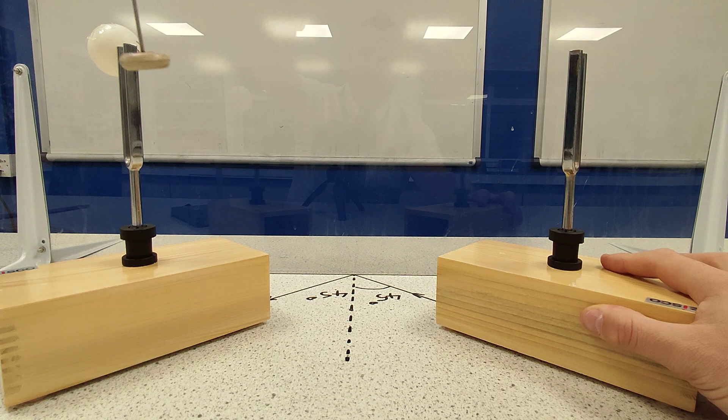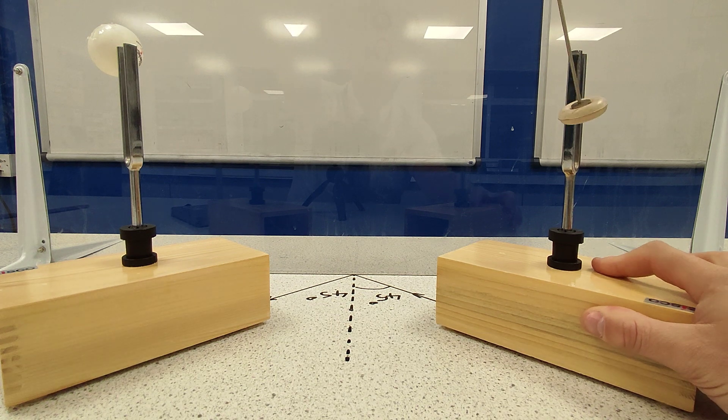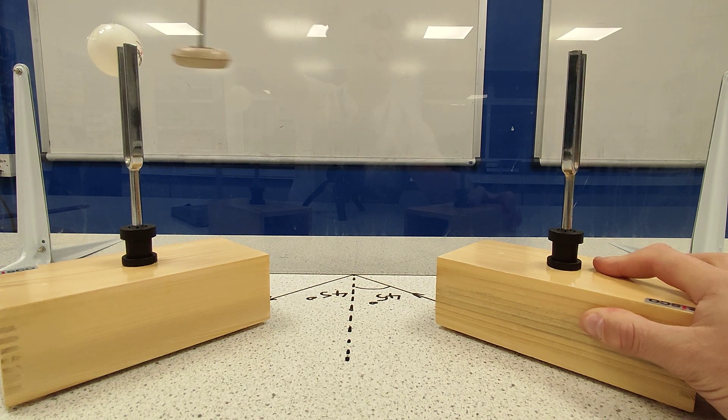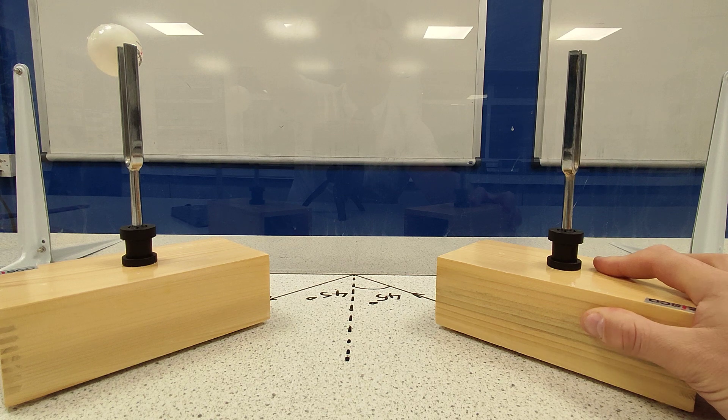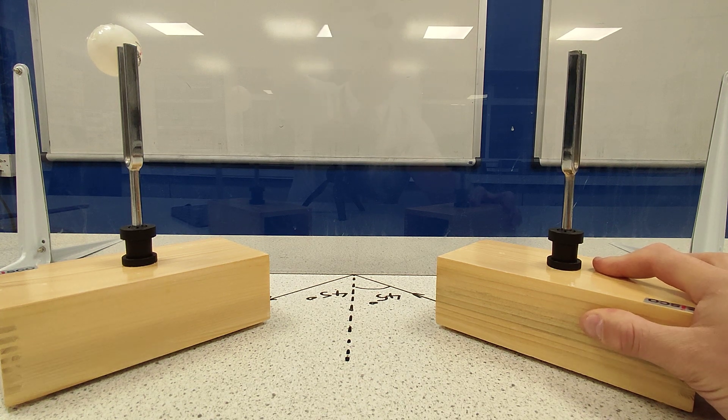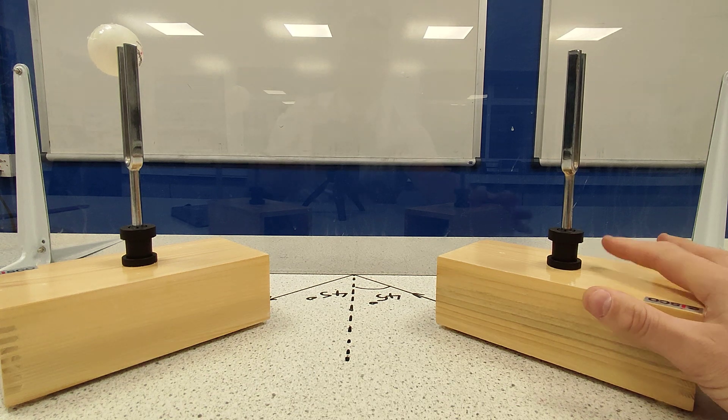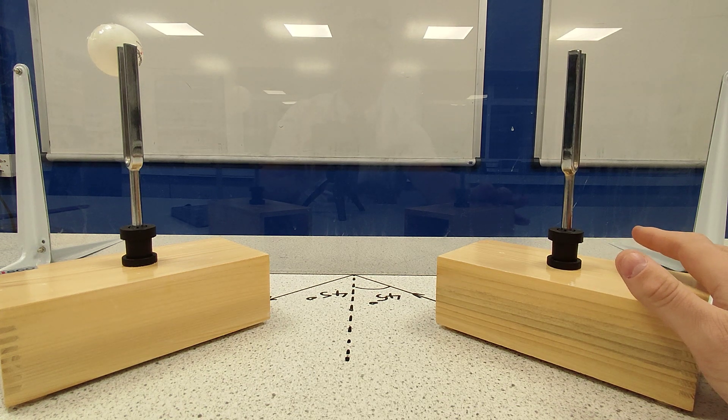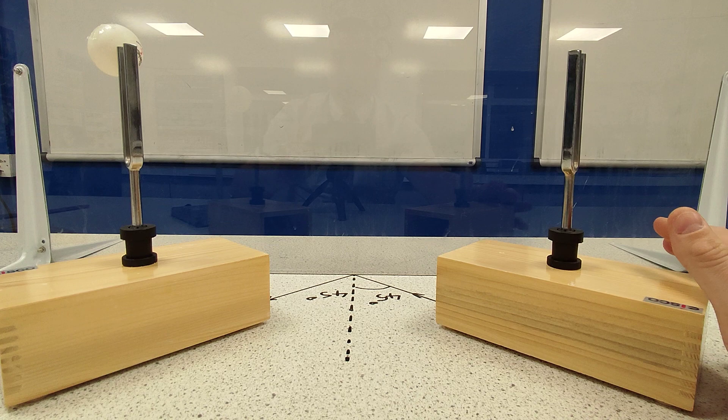So it's gone all the way round and it's making this tuning fork oscillate. And they're both also oscillating because they are both at the same frequency, so they also have a resonance effect. So there we go, reflection of sound.